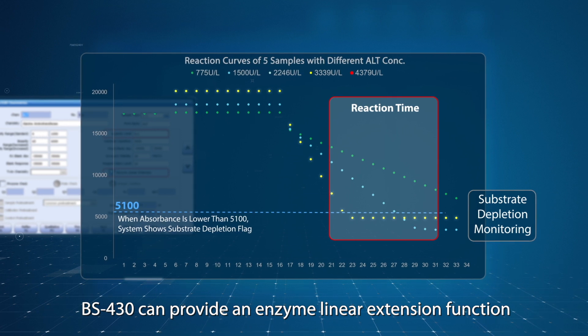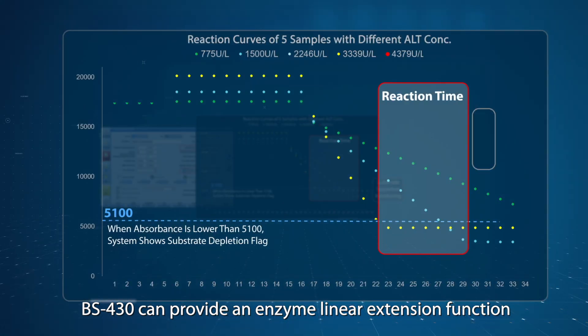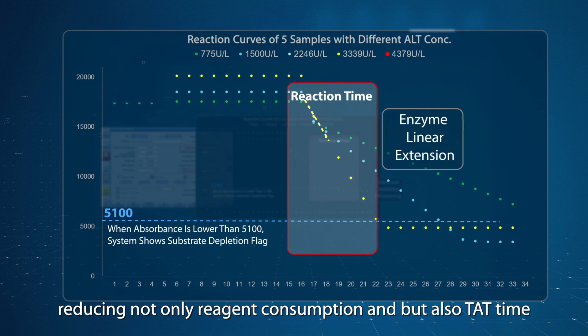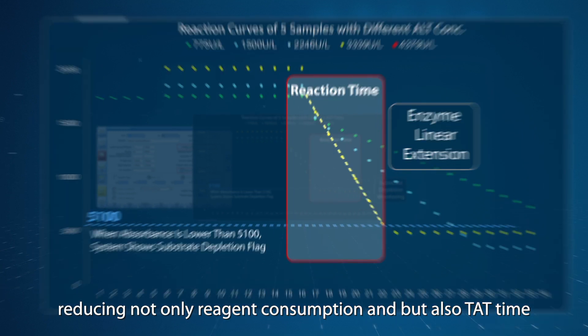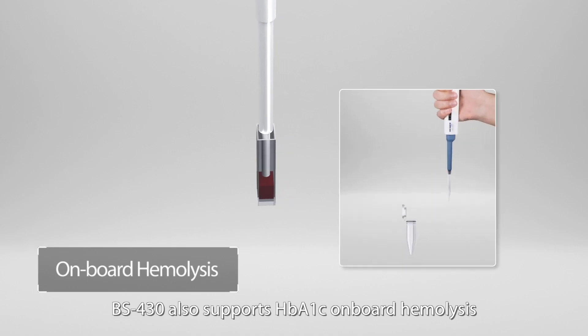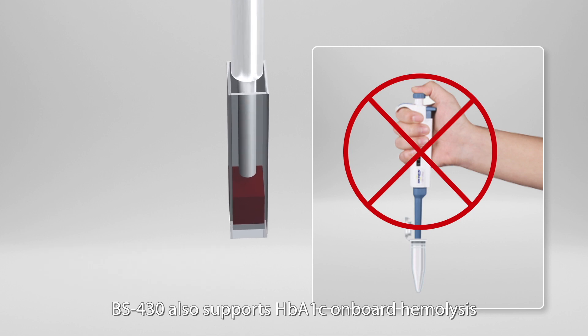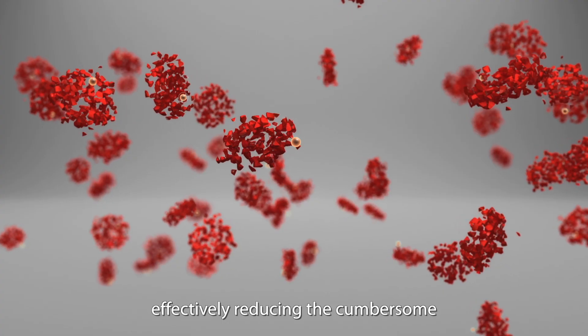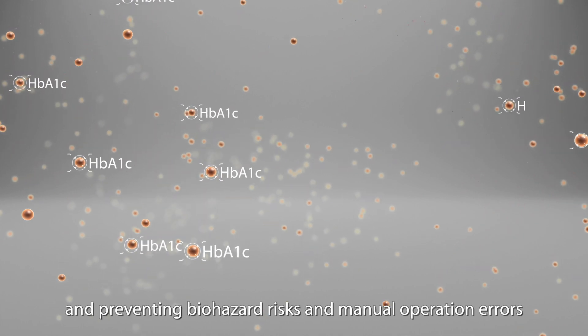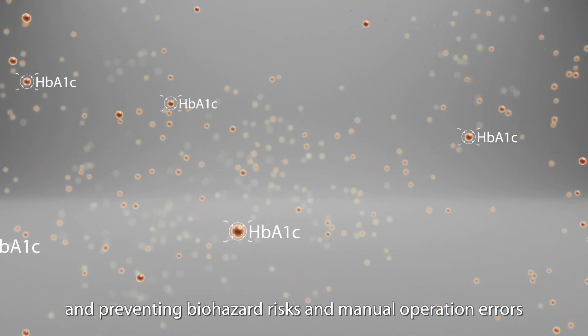Moreover, BS430 can provide an enzyme linear extension function, which delivers reliable results without dilution and rerun, reducing not only reagent consumption, but also TAT time. BS430 also supports HBA1C onboard hemolysis, effectively reducing the cumbersome procedures of manual preparation of hemolysates and preventing biohazard risks and manual operation errors.